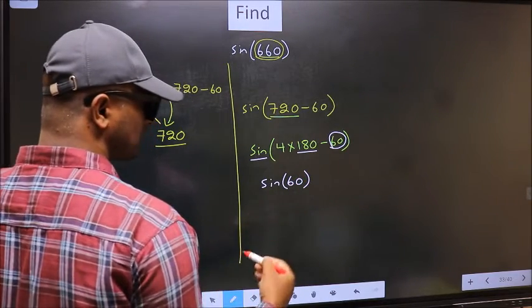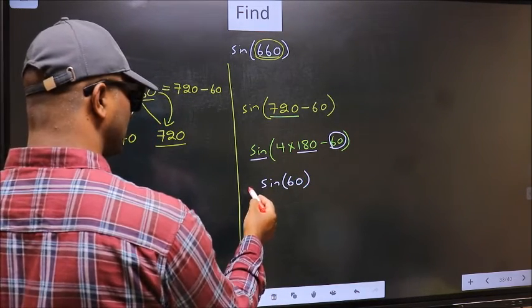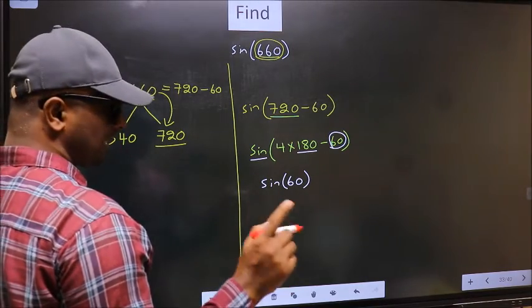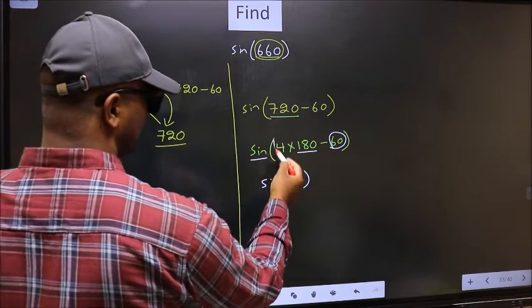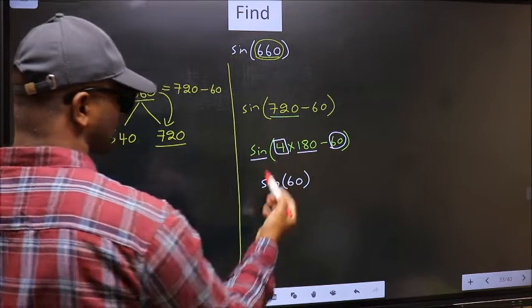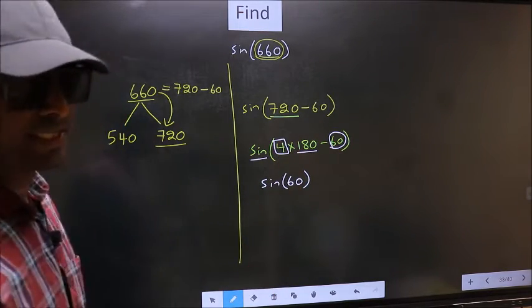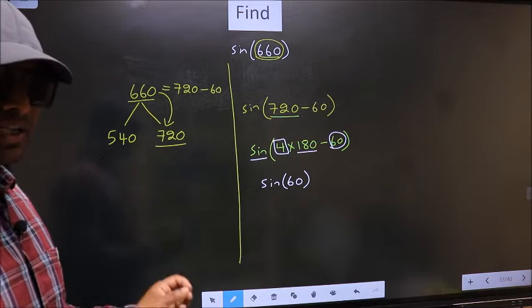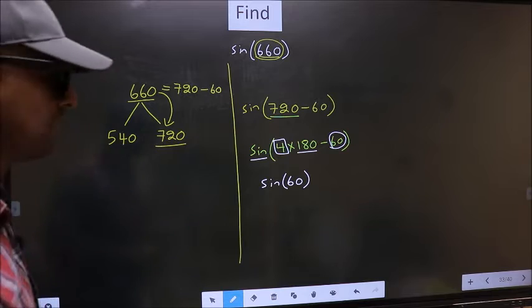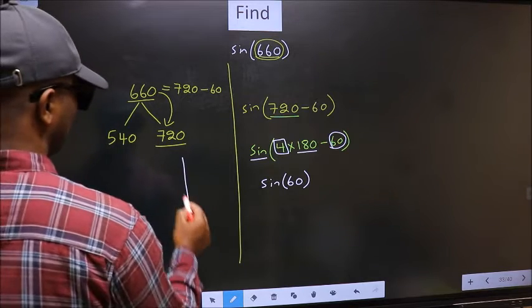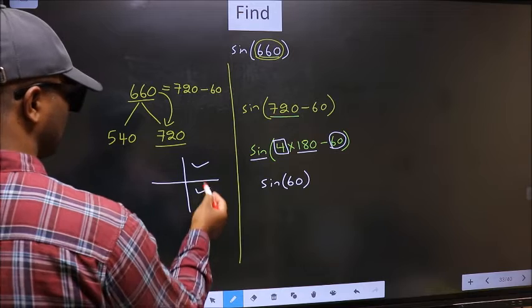Now the question is, will we get here plus or minus? To answer that, we should look at the number before 180. That is 4. And 4 is even. And all the even multiples of 180, they lie either in the first or in the fourth quadrant.